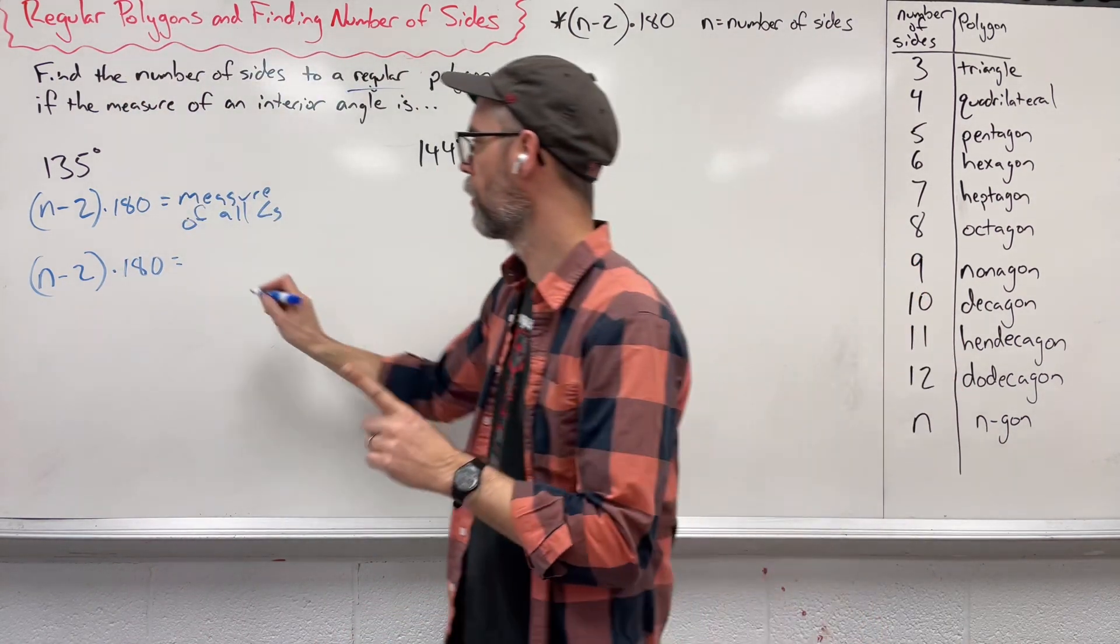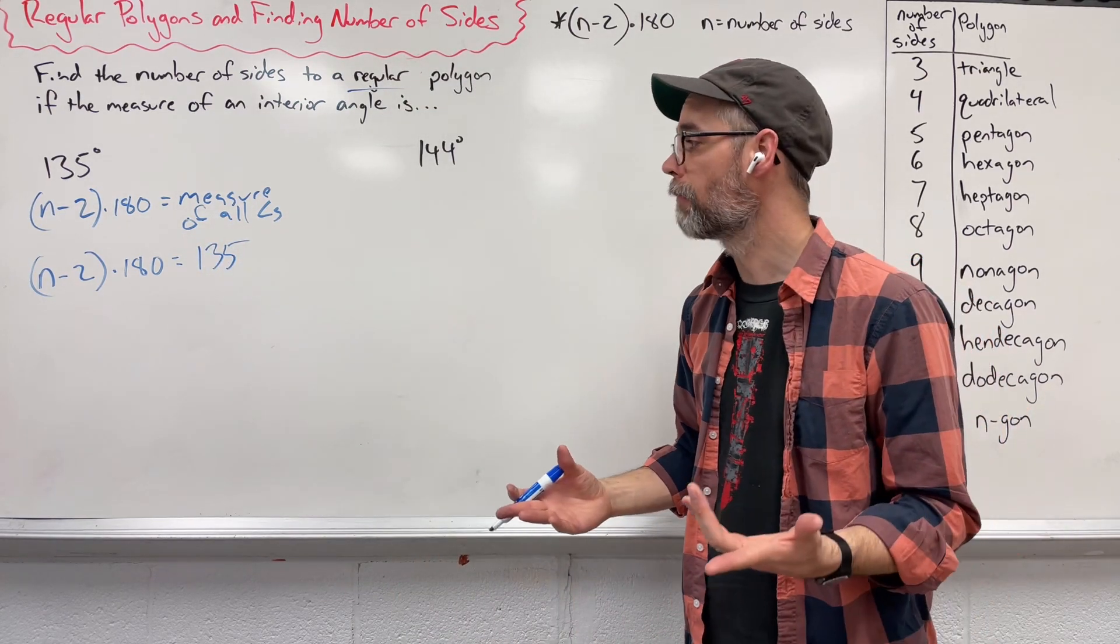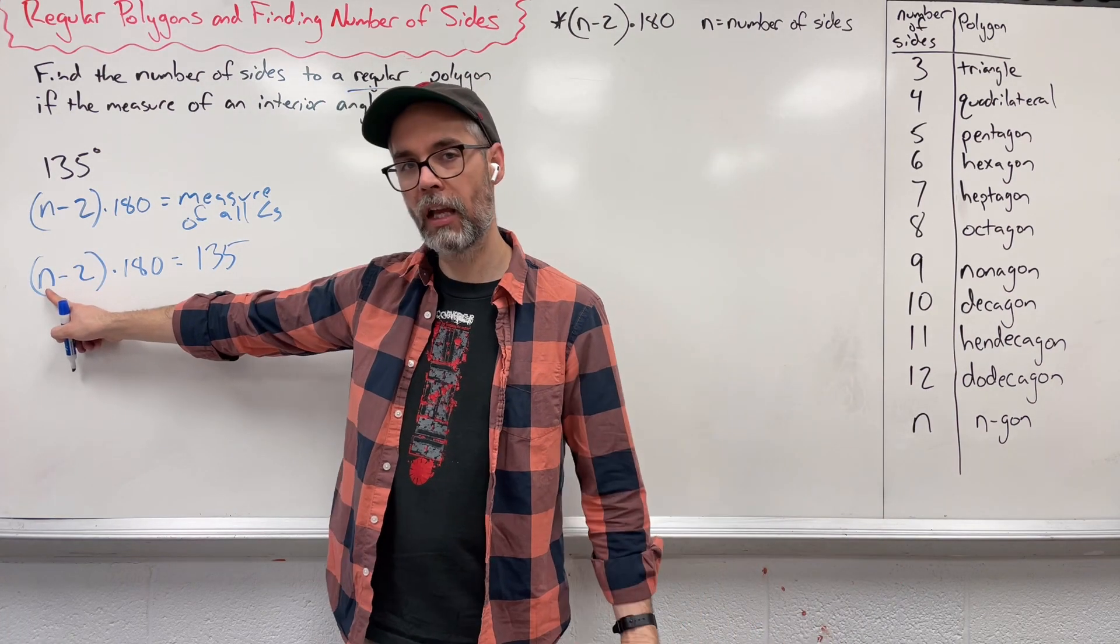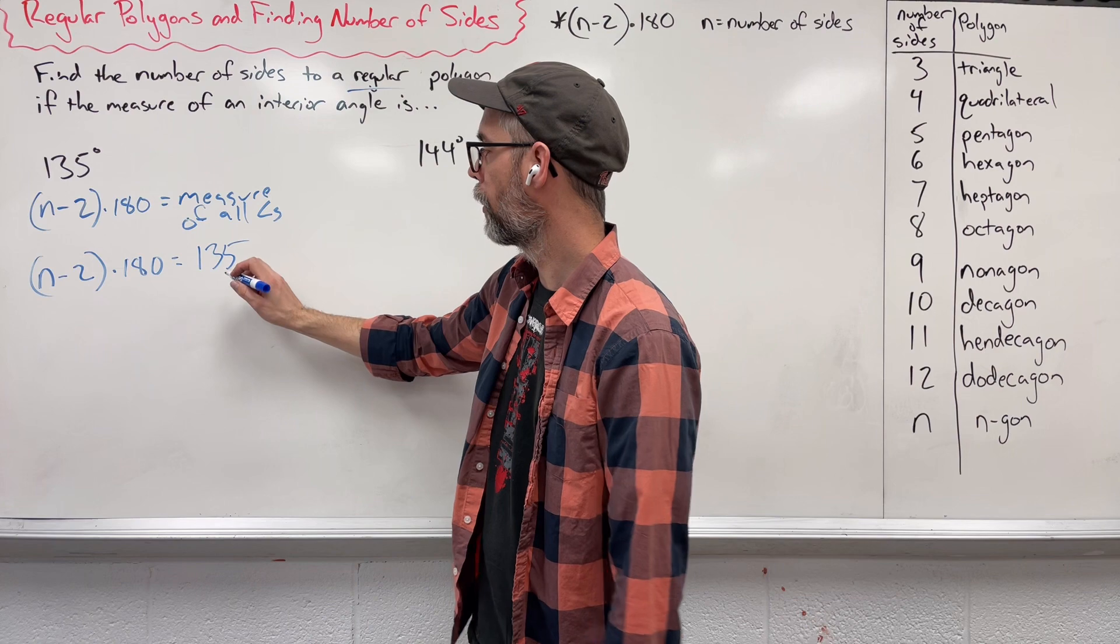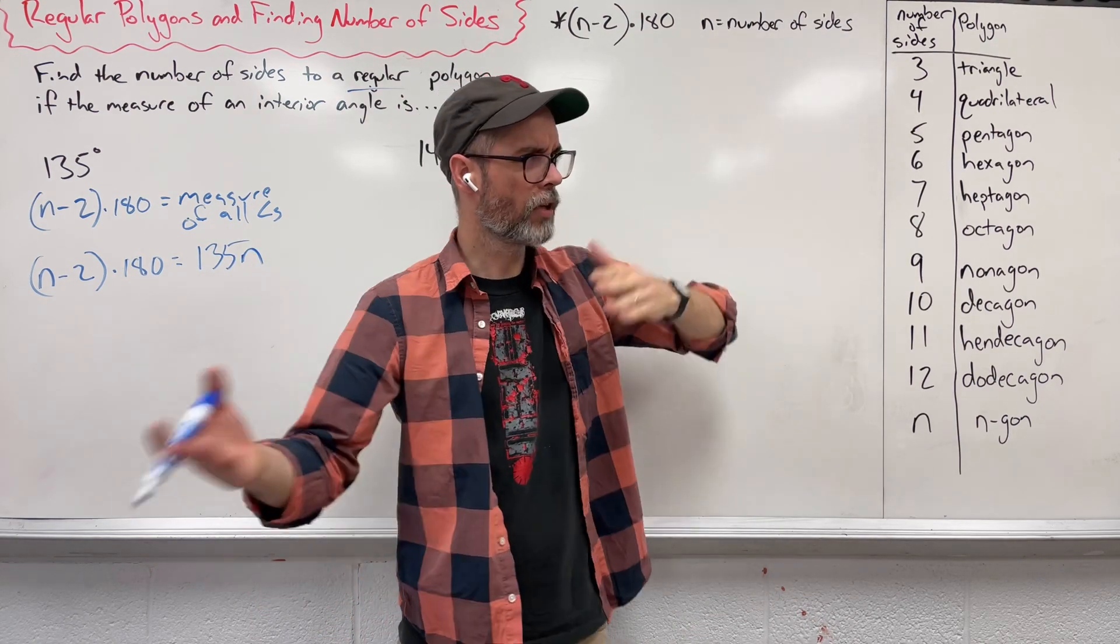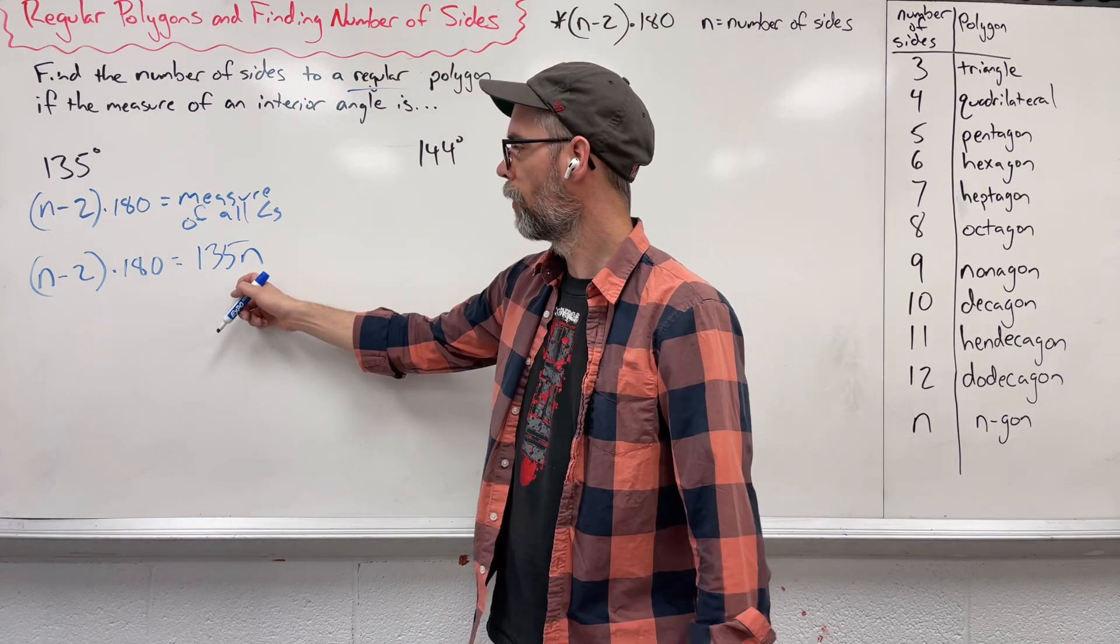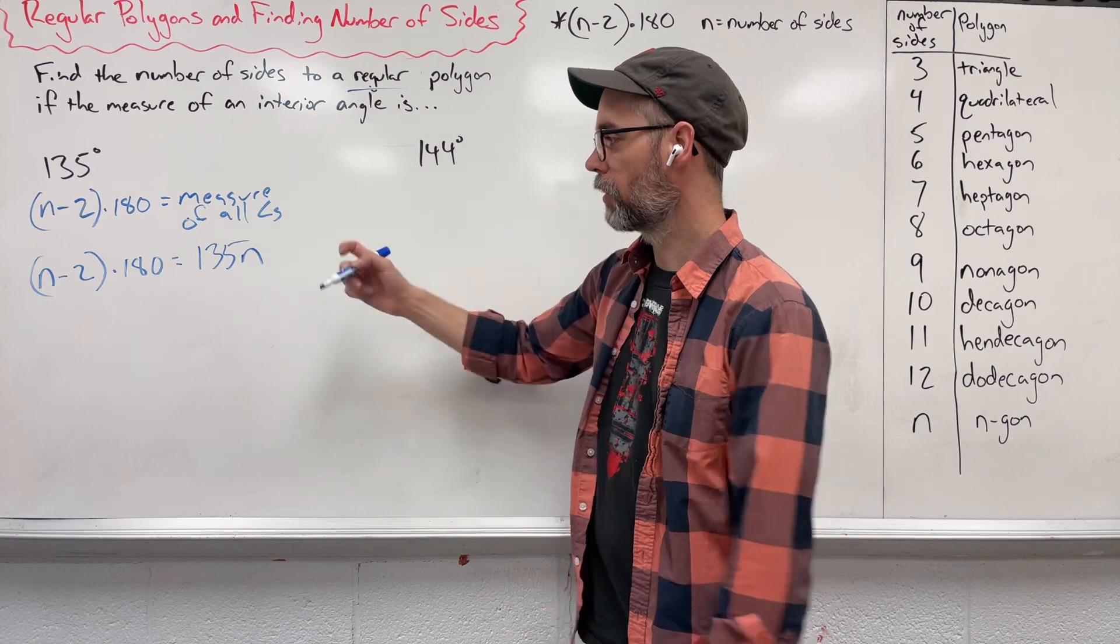I know one angle is 135. I don't know however many sides we have, but I know that n stands for the number of sides. So if I say 135 times n, that means number of sides, number of angles are going to be the same. 135 times n, this gives us everything. So let's now use algebra to solve for n.